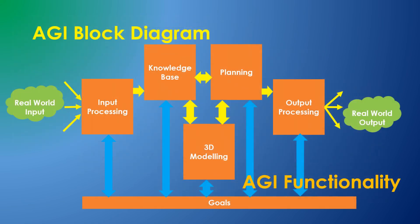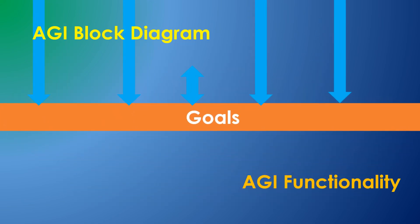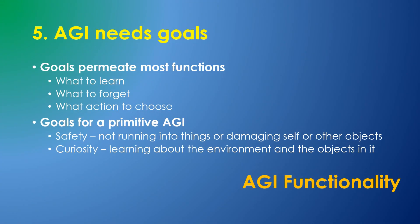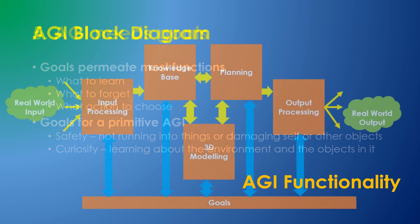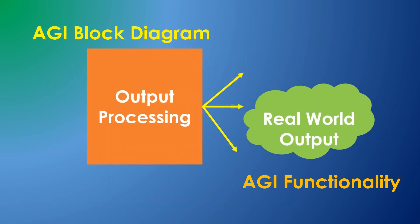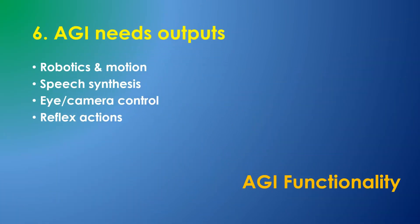Which brings us to item five: AGI needs goals. In order to learn or evaluate decisions, the AGI needs a set of scales to measure against — I am calling these goals. I am initially considering only two goals: safety and curiosity. This should motivate a robot to learn and explore without doing too much damage. Number six: Output Processing. After a behavior is selected, it is passed to robotic control or speech synthesis, both of which need to be adapted to learn and become more adept at new behaviors and new words.